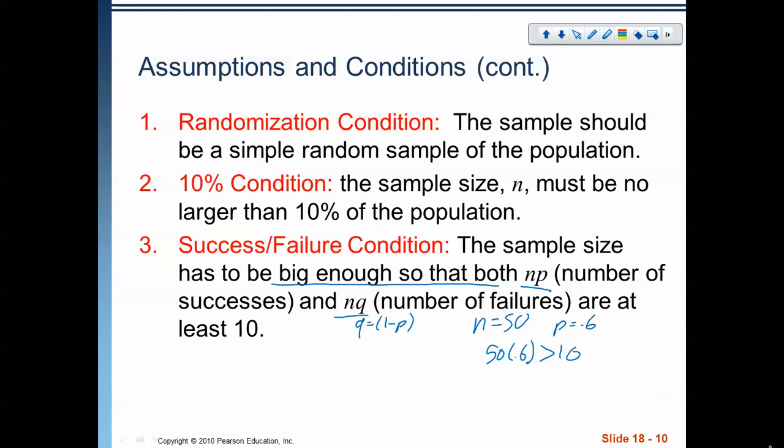So, that's 30 is greater than 10. And then we also have to go the other way, 50 times 0.4 is greater than 10. So, that says that 20 is greater than 10. And then we can kind of check that off.